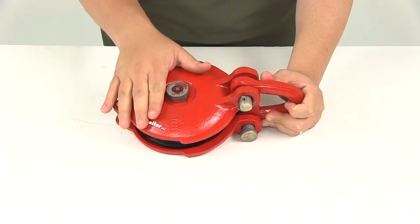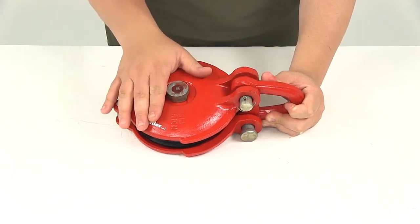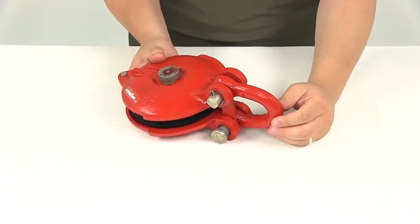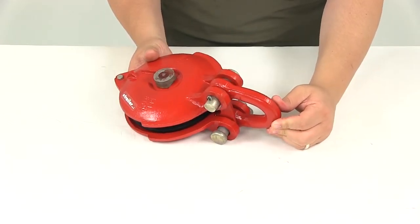Now the pulley block is going to have a cast iron housing with a nice red powder coat finish. The shackle is going to be made from a forged alloy steel construction.